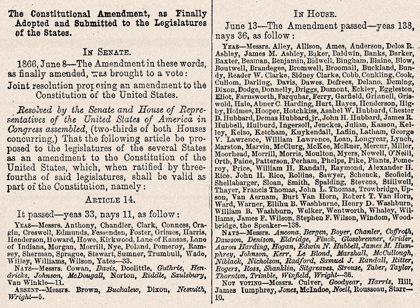When the government seeks to burden a person's protected liberty interest or property interest, the Supreme Court has held that procedural due process requires that, at a minimum, the government provide the person notice, an opportunity to be heard at an oral hearing, and a decision by a neutral decision maker. Such process is due when a government agency seeks to terminate civil service employees, expel a student from public school, or cut off a welfare recipient's benefits. The court has also ruled that the Due Process Clause requires judges to recuse themselves in cases where the judge has a conflict of interest. In Caperton v. A.T. Massey Coal Co., 2009, the court ruled that a justice of the Supreme Court of Appeals of West Virginia had to recuse himself from a case involving a major contributor to his campaign for election to that court.